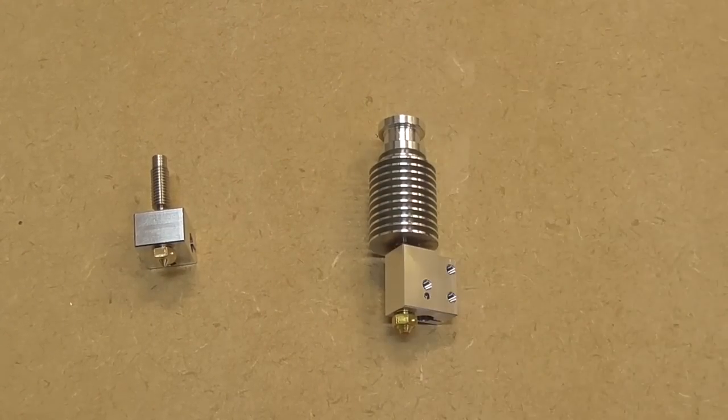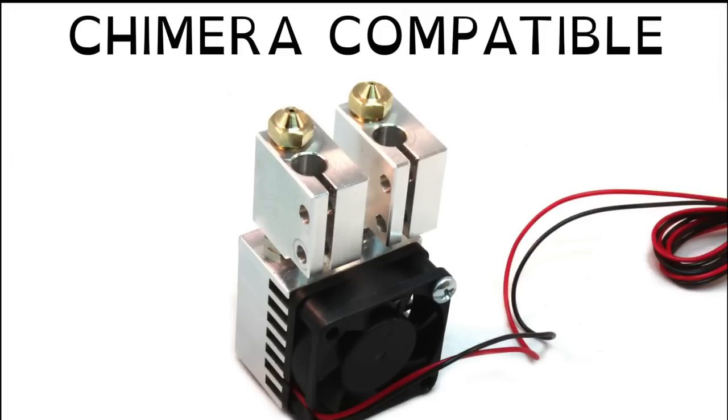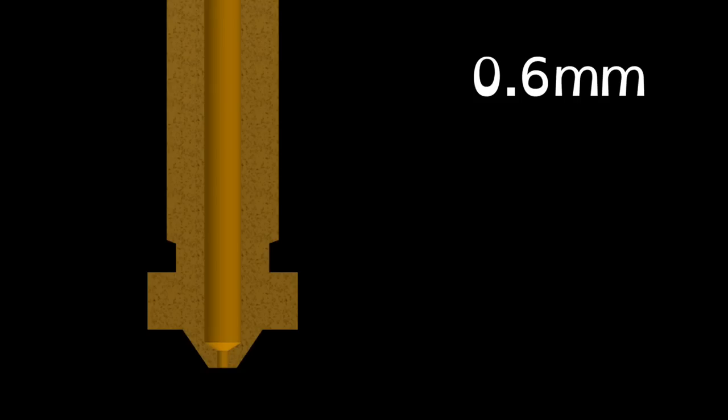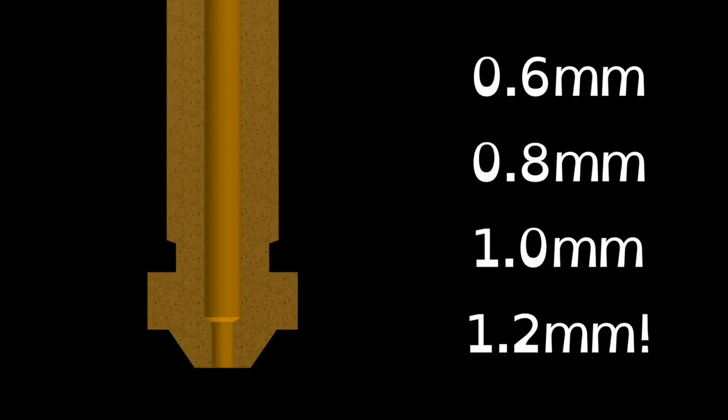The thermistor and heater cartridge are both clamped in the same easy and efficient way as they are on V6. As usual, there's a range of nozzles available to suit your needs.